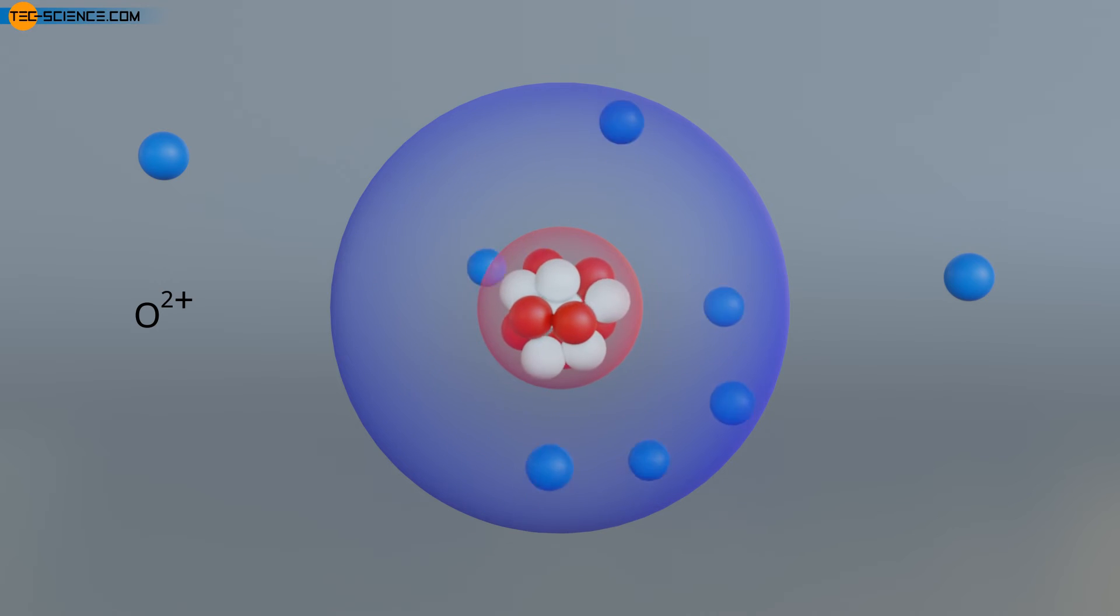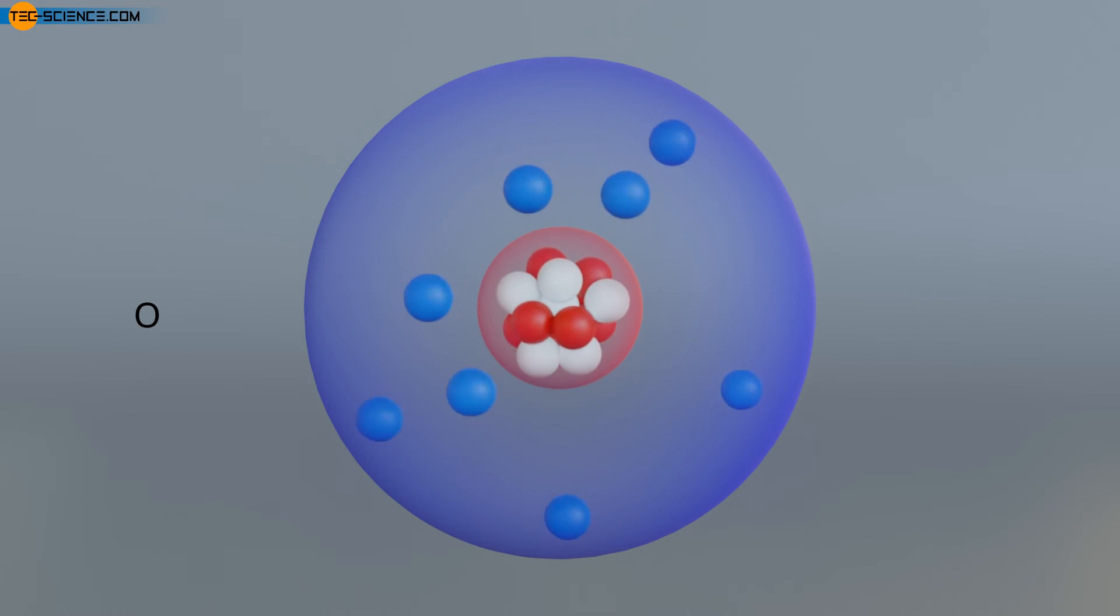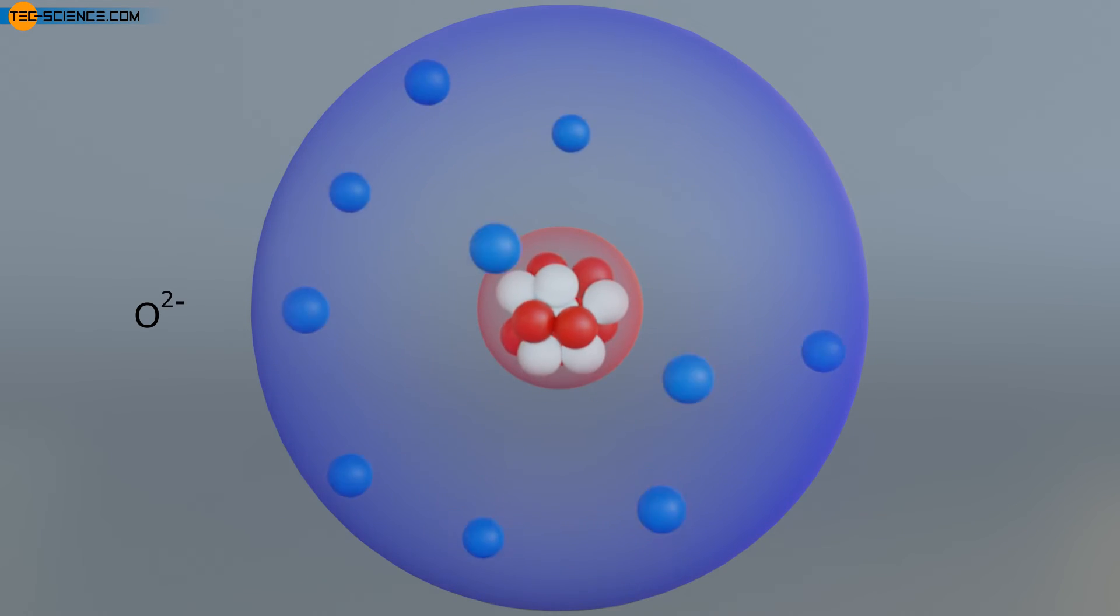Cations are smaller in size than their respective atom due to the deficiency of electrons, and anions are larger in size because of the excess of electrons.